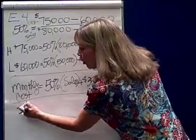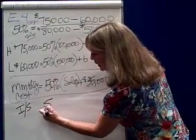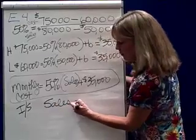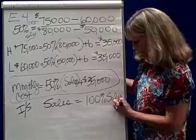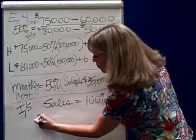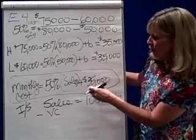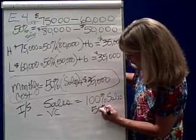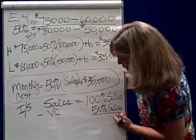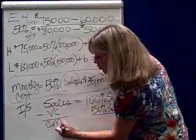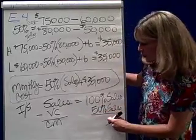And this income statement says, if I know what sales are, and do you agree with me, sales are equal to 100% of sales. And in this case, minus variable cost, and in this case, variable cost is what, 50% of sales. That will give me what we call our contribution margin, CM. Contribution margin. And my contribution margin, that means for every sales dollar,